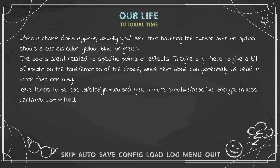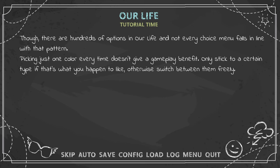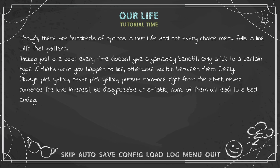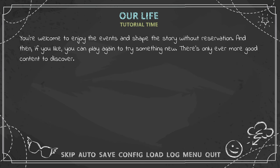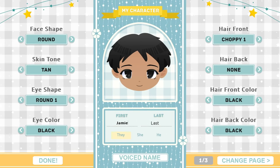Blue tends to be casual and straightforward, yellow more emotive and reactive, and green less certain or uncommitted. There are hundreds of options in 'Our Life' and not every choice falls in line with that pattern — picking just one color doesn't give a gameplay benefit. Always pick yellow, never pick yellow, pursue romance right from the start, never romance — none of them will lead to a bad ending. I remember the developer saying there are no bad endings — you can just play however you want and totally relax.